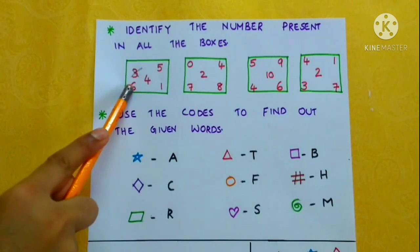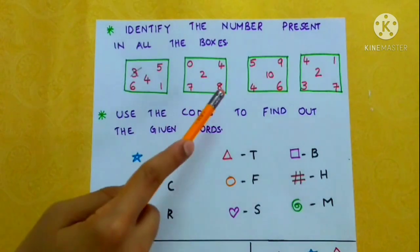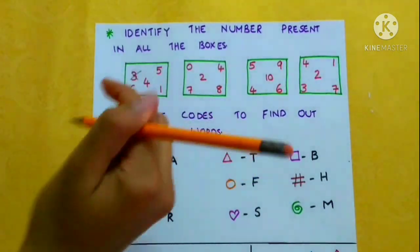Now we have to check whether six is in all the boxes. No, six is not there in this box and this box, so we have to cross out six.